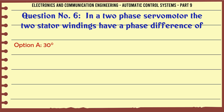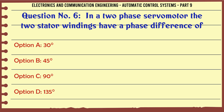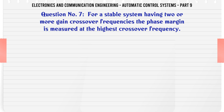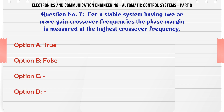In a two-phase servomotor, the two stator windings have a phase difference of: A. 30°, B. 45°, C. 90°, D. 135°. The correct answer is: 90°.